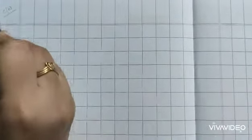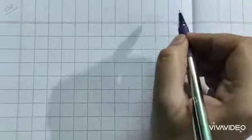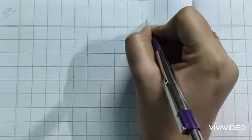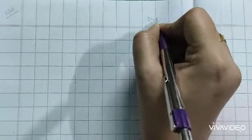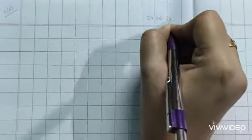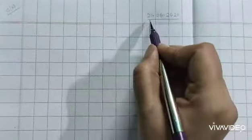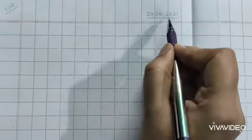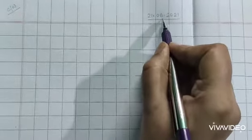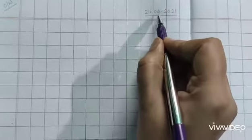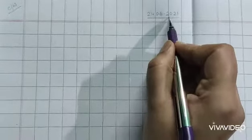Write CW at the top of the left side, and on the right side write today's date. Date 21-06-2021 means today's date is 21st June. June is the 6th month of the year, that is 06, and the year is 2021.